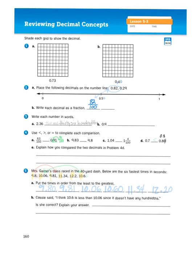And that, my friend, is how I lay out those numbers from least to greatest. The last part here, where it says Cassie said, I think ten and six-tenths is less than ten and six-hundredths since it doesn't have any hundredths. Is she correct? Well, you and I both know, no, she's not correct. How would you explain that?